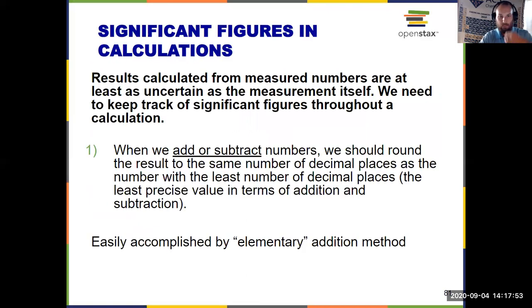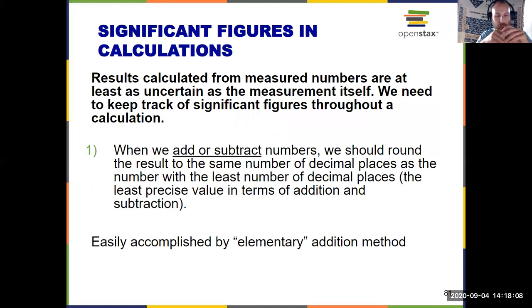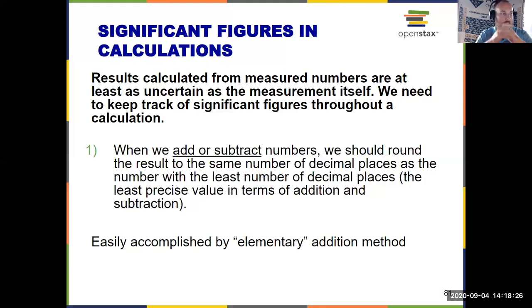What about doing math and calculations with sig figs? It really comes down to two rules: one for addition and subtraction, and another for multiplication and division. We have to pay attention to these rules because when we're doing math with numbers from measurements, the result can only be as certain as the least certain thing that went into the math. So we have to keep track of sig figs throughout.